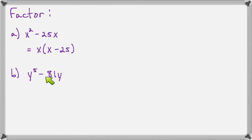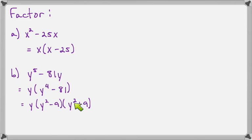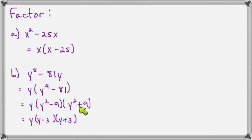Let's factor y⁵ minus 81y. Both terms have a factor of y, so factoring that out leaves y(y⁴ minus 81). This is a difference of squares, because y⁴ is (y²)(y²) and 81 is 9 times 9. Factoring gives y(y² minus 9)(y² plus 9). Now checking again: y² minus 9 is another difference of squares, factoring into (y minus 3)(y plus 3). The term y² plus 9 is a sum of squares — not a difference — so it cannot be factored. The final answer is y(y minus 3)(y plus 3)(y² plus 9).